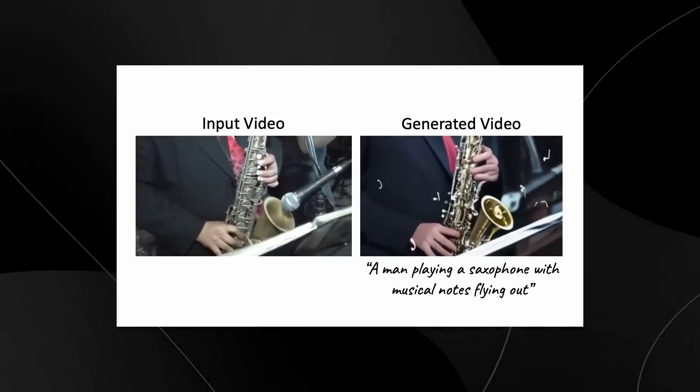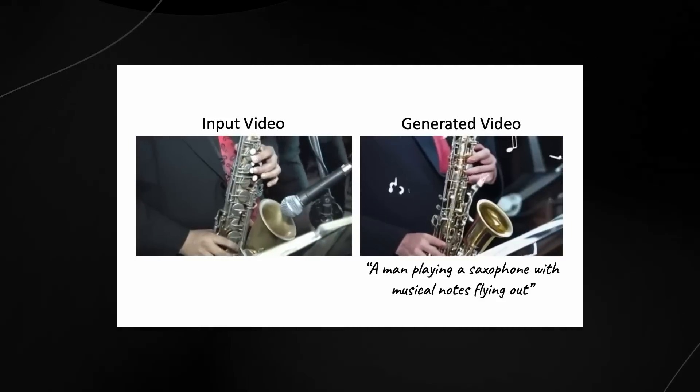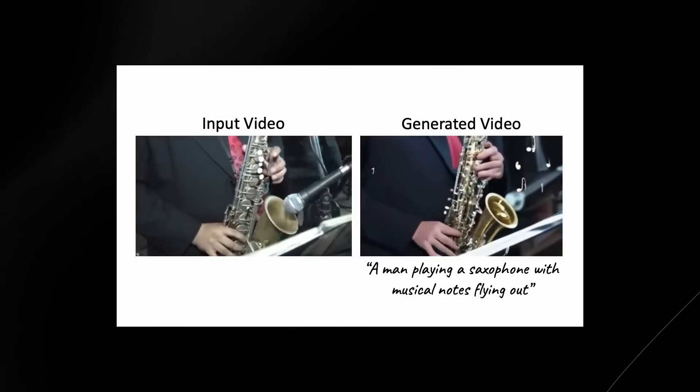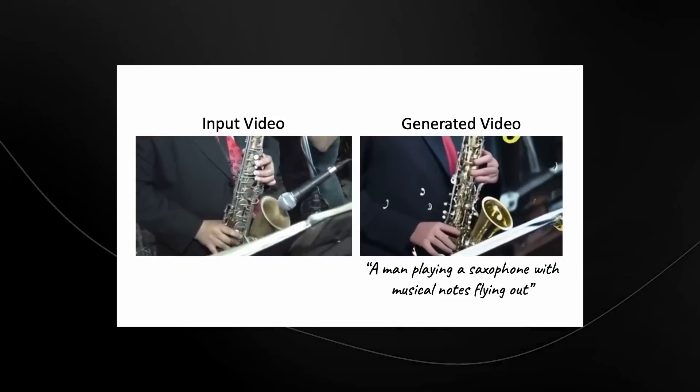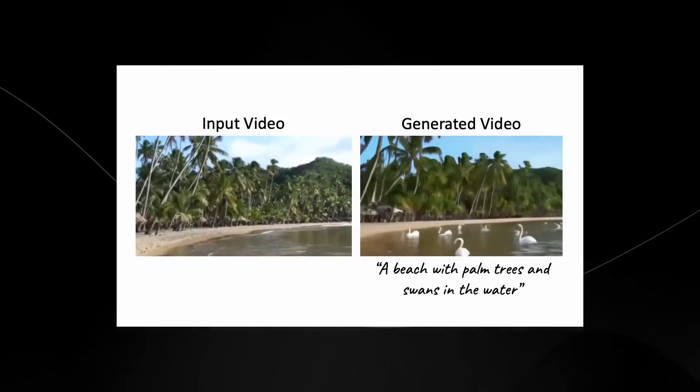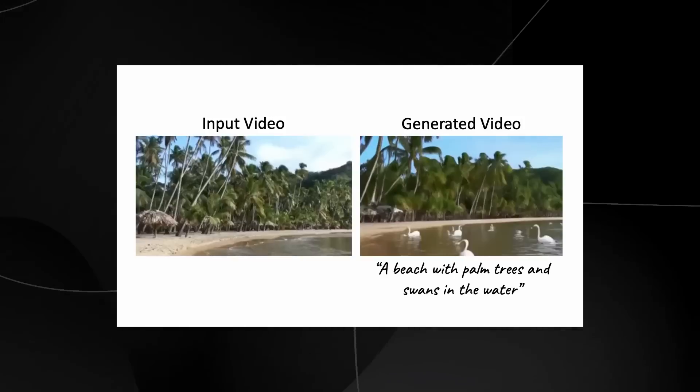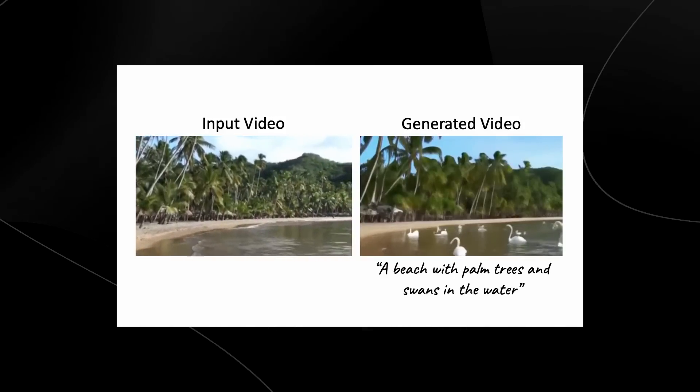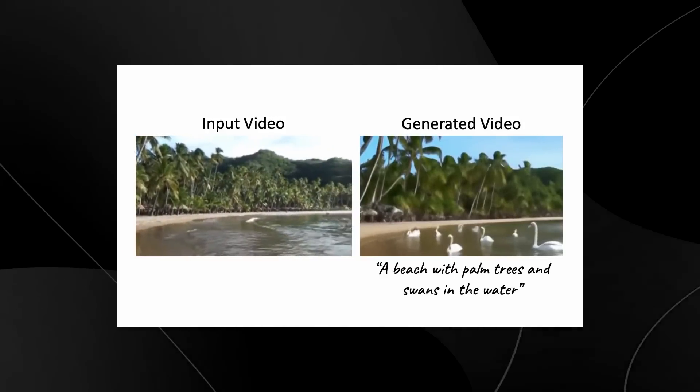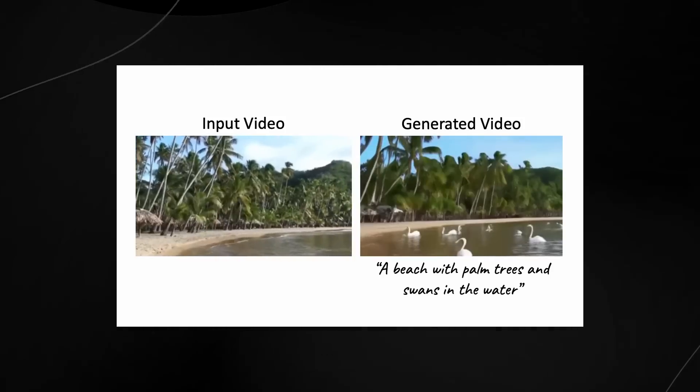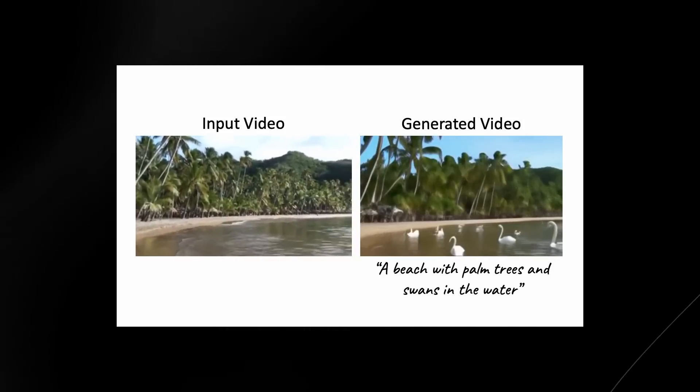This one right here is another great example of how you can use natural language to increase a video's capabilities by just having these things on screen. And honestly, this is truly, truly great because it just shows us what kinds of examples we're going to be getting in the future when this stuff is fine-tuned. And this one right here is really, really cool as well. It's a beach with palm trees and swans in the water. And from the input video compared to the generated video, you can see that it definitely does look pretty realistic. Definitely one of the more realistic ones.